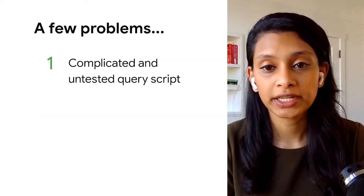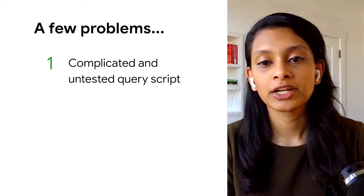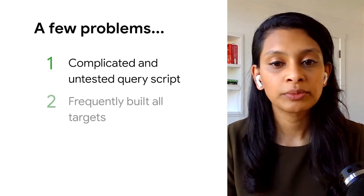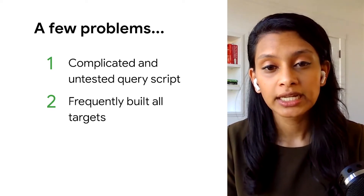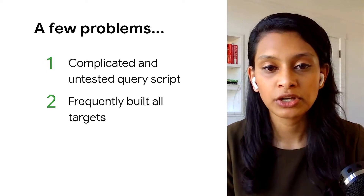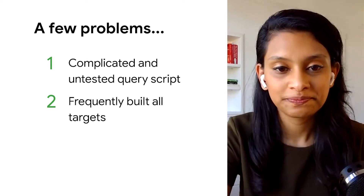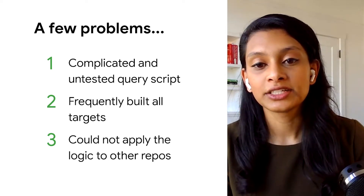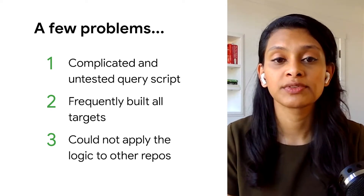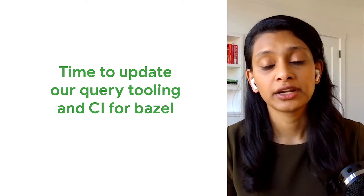There were a few problems with this approach. The Python script was really complicated — it had to handle a lot of edge cases like what to do when there's a change in shared code, so it quickly became very unwieldy. It also did not help that it was untested, making it difficult for our team to make changes when needed. Secondly, when the script could not determine which project targets to run, it would fall back to building everything, which was really expensive. In our Java repo with 250 services and over 7,000 Bazel targets, frequently building all of those was causing unnecessary delay in our CI feedback cycle. Lastly, we couldn't apply the script to any of our other larger repos we were migrating to Bazel — it was specific to this Java repo.